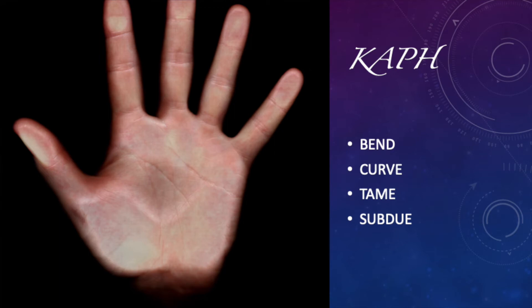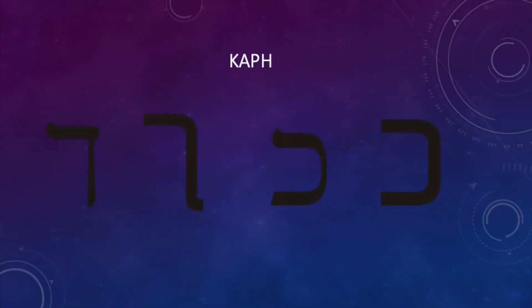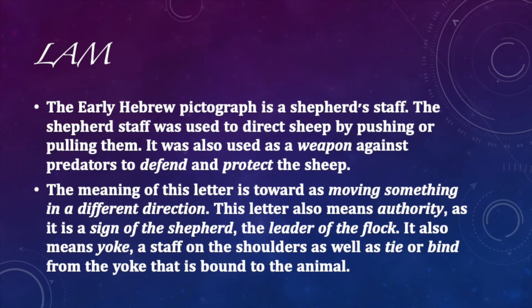Here's what the letter Kaf looks like, and what the final Kaf looks like — the final Kaf is placed at the end of a word. The next letter is the Lamed. In ancient Hebrew, Lamed represents the shepherd's staff, which is used to direct sheep, pushing and pulling them. It's also used as a weapon to protect and defend against predators.